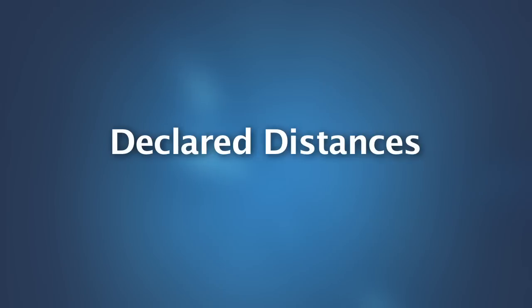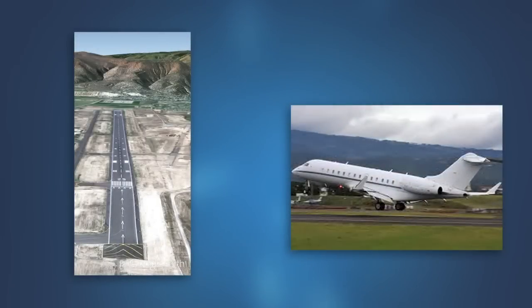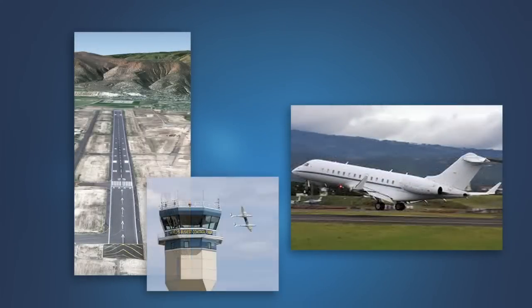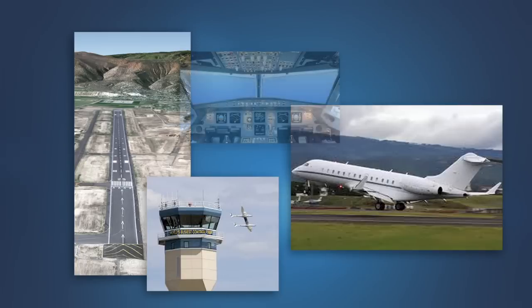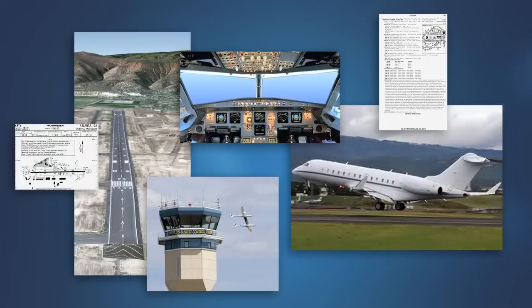Declared Distances: learning how to use and interpret declared distances data. The runway required for takeoff and landing of a jet-transport airplane is an important calculation that every pilot must complete before or during a flight. An important element in this calculation is the knowledge of the usable length of runway available for the takeoff and landing operation. Therefore, it is important that pilots be aware of the concept of declared distances as a means of reporting usable runway lengths for takeoff and landing.